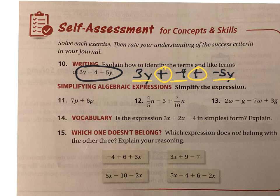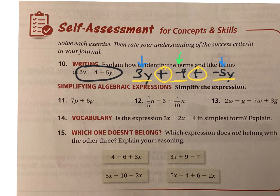To explain which ones are the like terms: negative 4 is a constant — it doesn't have a variable, it's never going to change. That's not like anything else, so it's just one of the terms. But then I have 3y and negative 5y. Both of them have a y variable, so I know those are like. My like terms would be 3y and negative 5y, and then I have the constant negative 4.